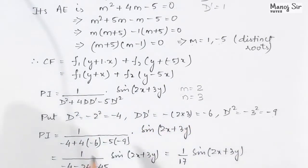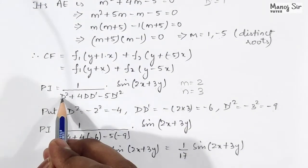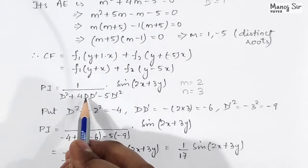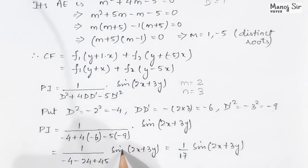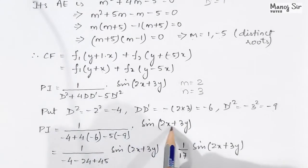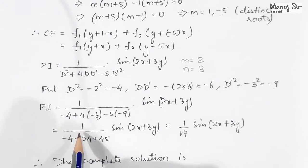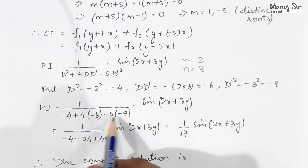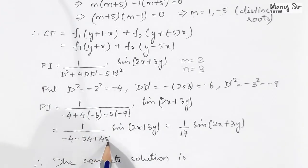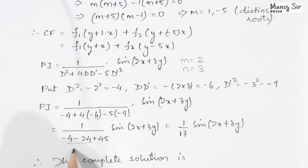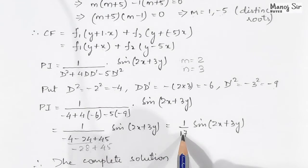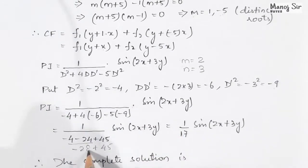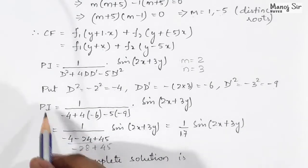Substituting into PI: 1 / (-4 + 4×(-6) - 5×(-9)) × sin(2x + 3y). That is: -4 + (-24) + 45. Adding these: -4 - 24 = -28, and -28 + 45 = 17. So the denominator is 17, giving PI = (1/17) sin(2x + 3y).